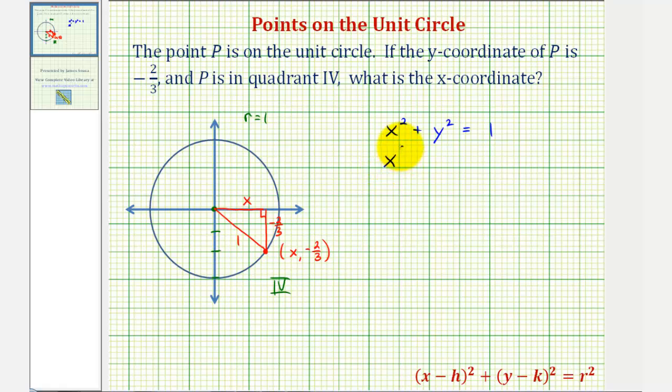We'd have x-squared plus negative two-thirds-squared equals one, so x-squared plus, a negative times a negative is positive, and two-squared is four and three-squared is nine, this is four-ninths equals one.